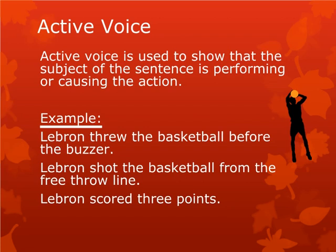When the subject of a sentence performs the verb's action, we say that the sentence is in the active voice. Sentences in the active voice have a strong, direct, and clear tone. Here are some short and straightforward examples of active voice: LeBron threw the basketball before the buzzer. LeBron shot the basketball from the free throw line. LeBron scored three points.